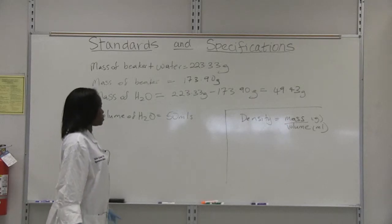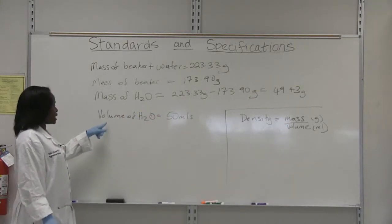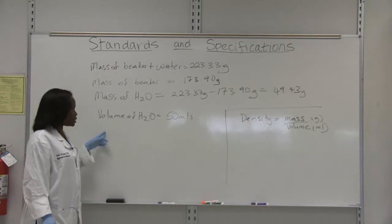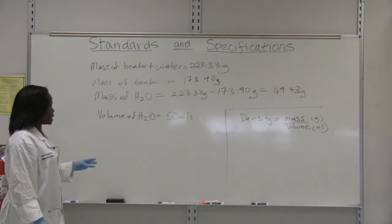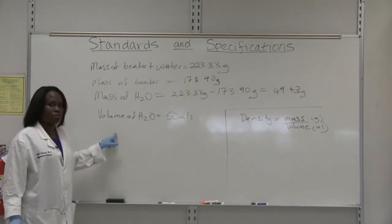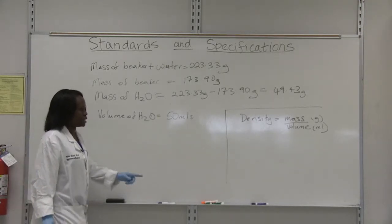So we know our mass of water. We also added a specific volume of water, which was 50 mils. So we know our weight of the water, we know the volume of the water, so therefore we can calculate the density.